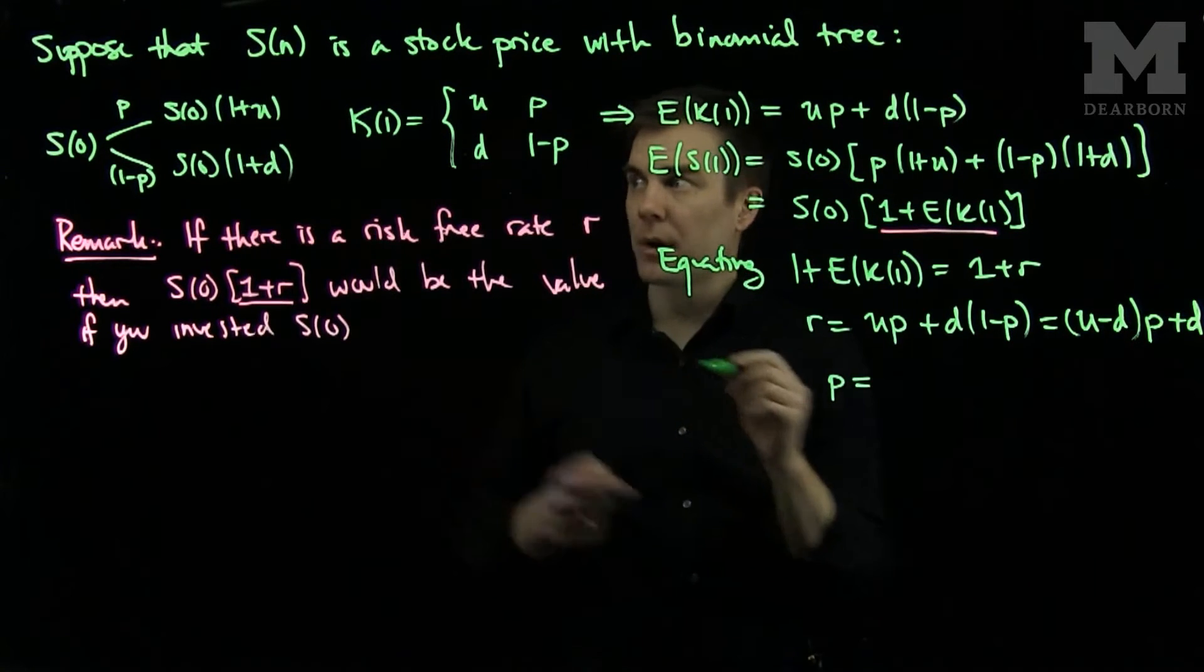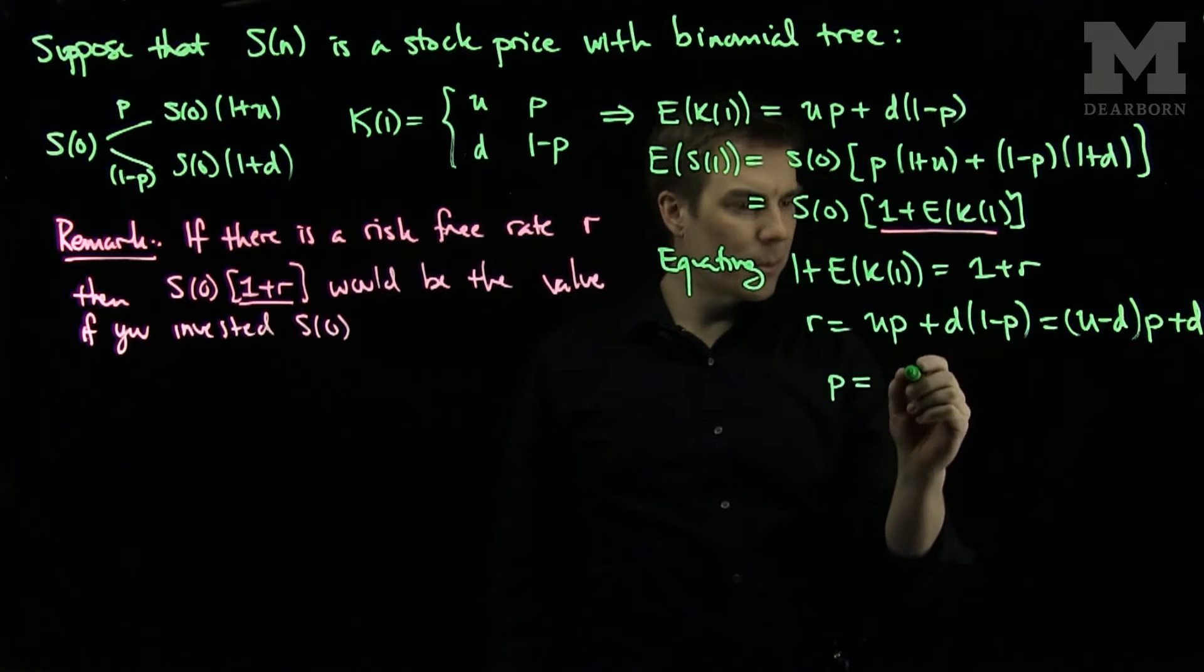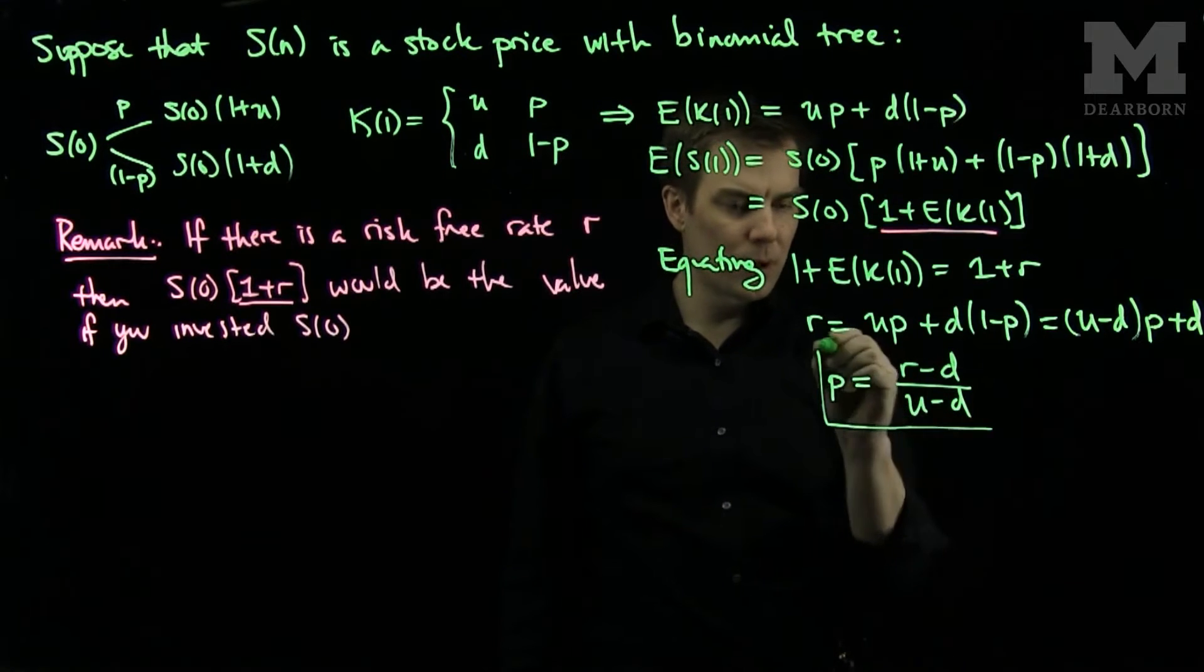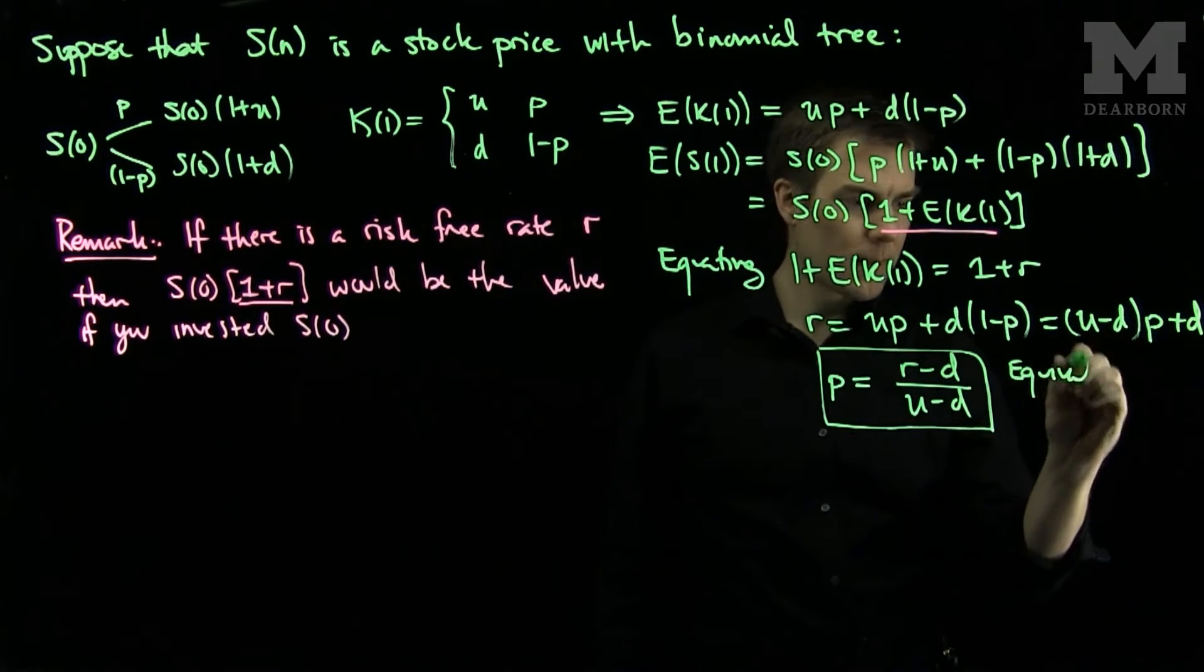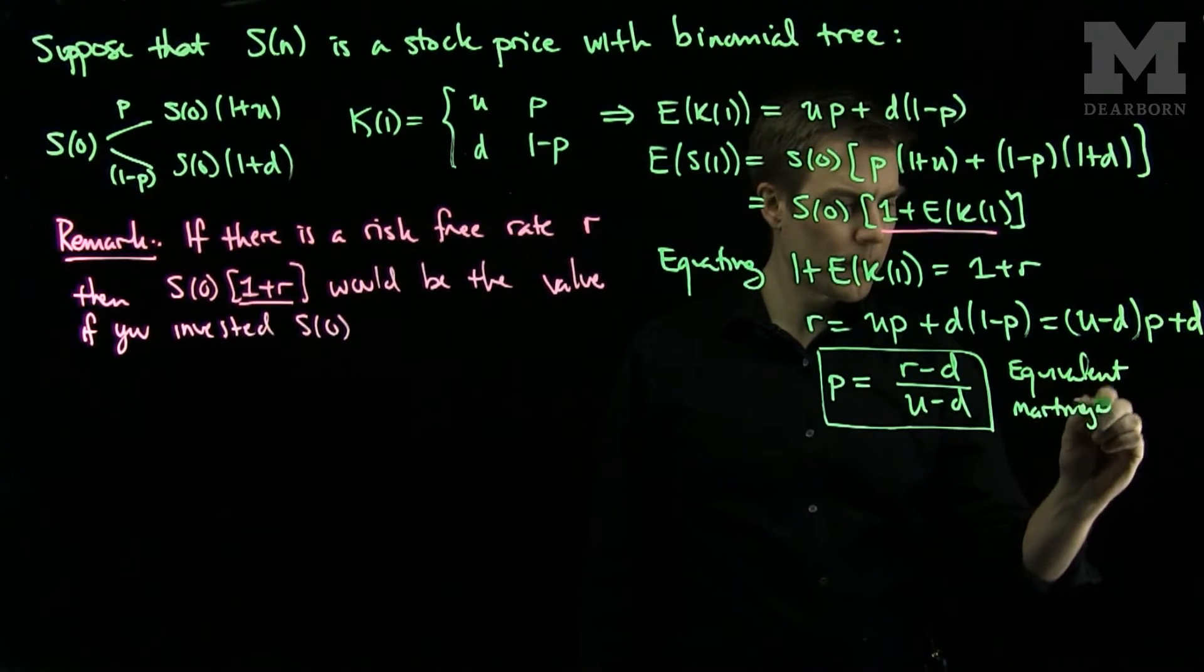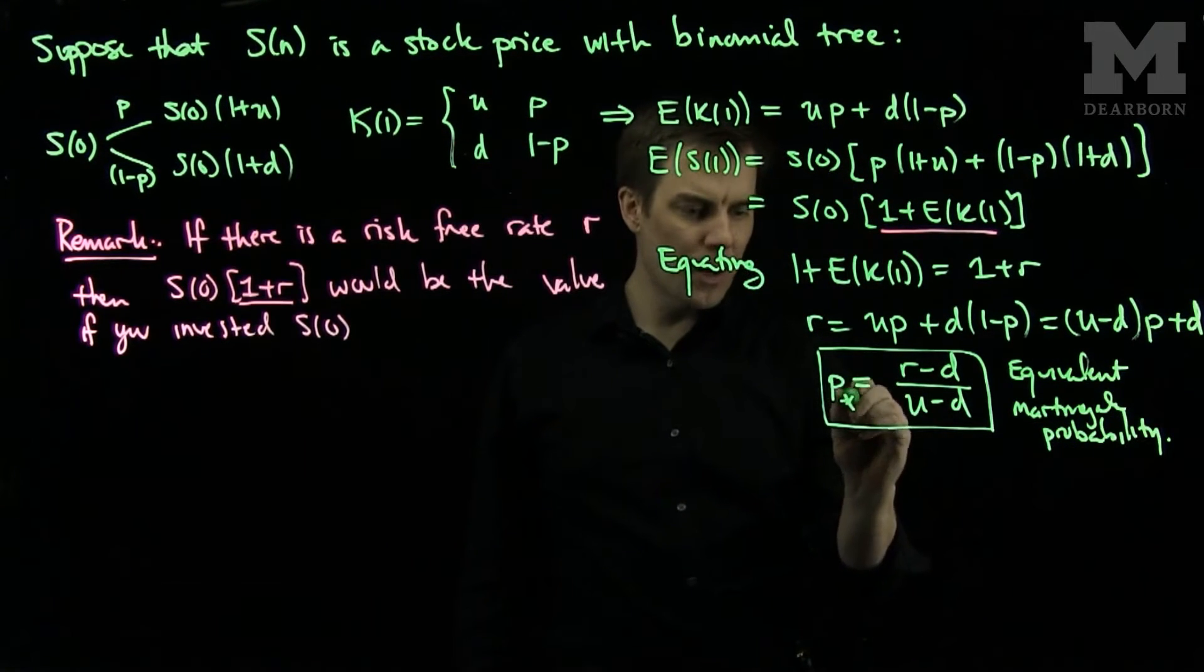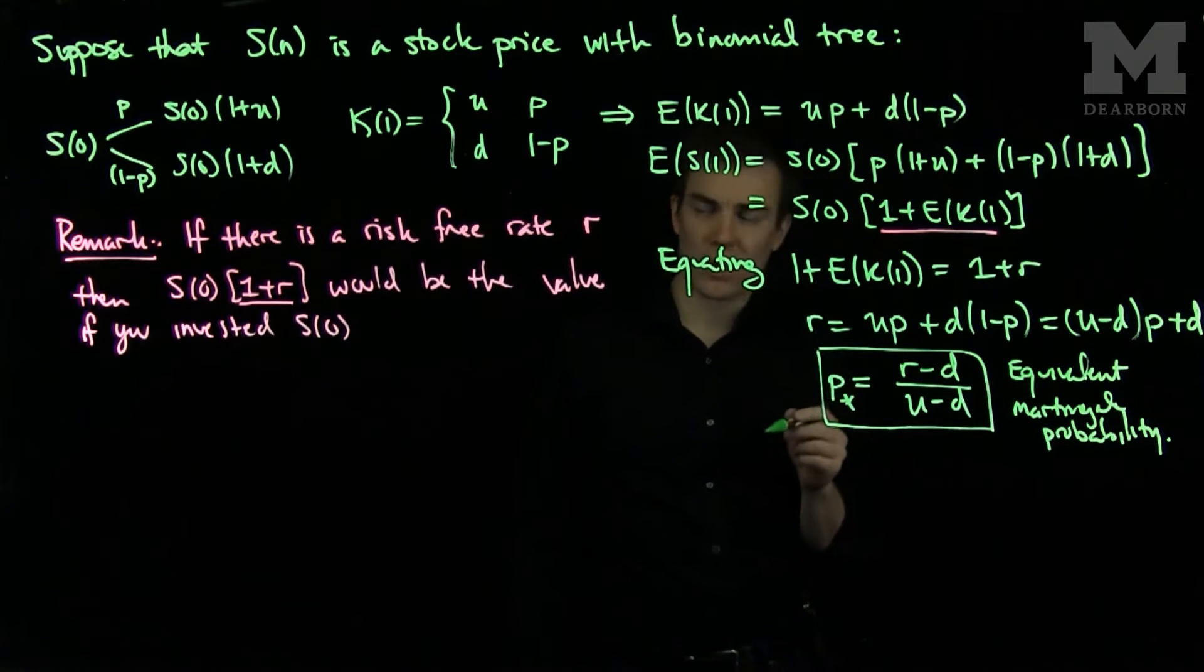if P, the probability of going up to a value of S_0(1+U), if that probability is (R-D)/(U-D), this special probability will be called the equivalent martingale probability. And typically we would write P* for this equivalent probability just to delineate it from all of the probabilities.